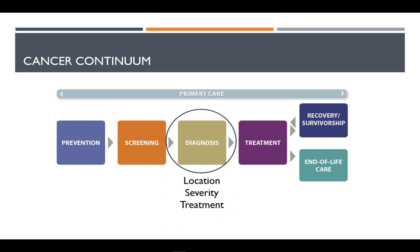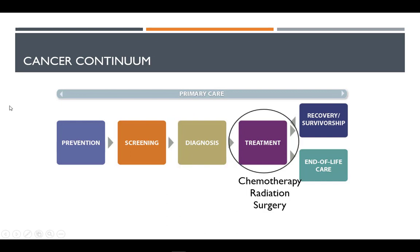When treatment or severity interferes with adequate nutrition, it presents a huge problem. Treatment plans will often include combinations of medication known as chemotherapy, radiation, and surgery. Chemotherapy can cause nausea, vomiting, and changes to food tastes that interfere with adequate intake, leading to anorexia. Radiation can interfere with body processes that affect nutrition, such as radiation to the neck that may cause dysphagia, or to the colon that leads to constipation or diarrhea.